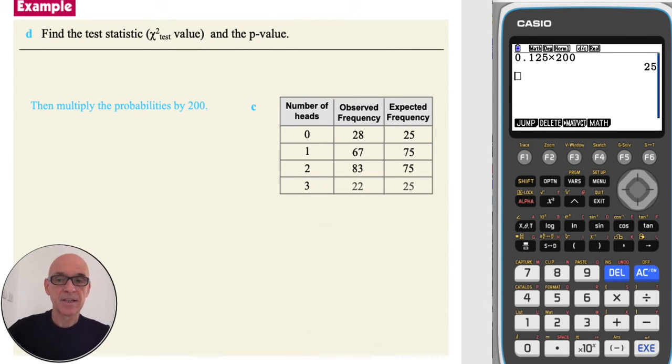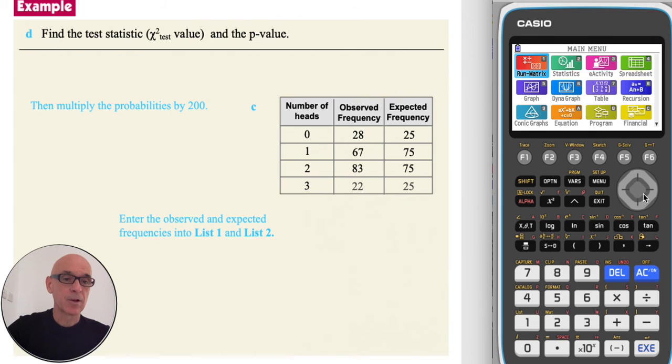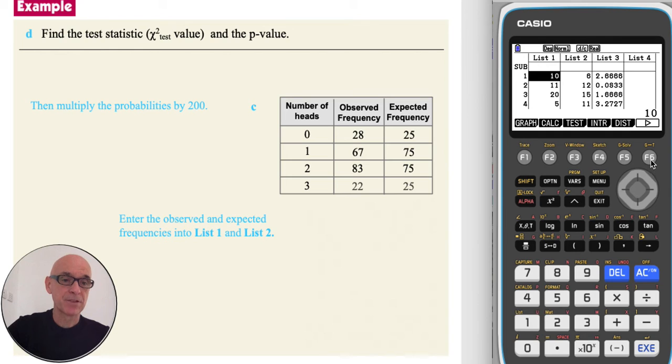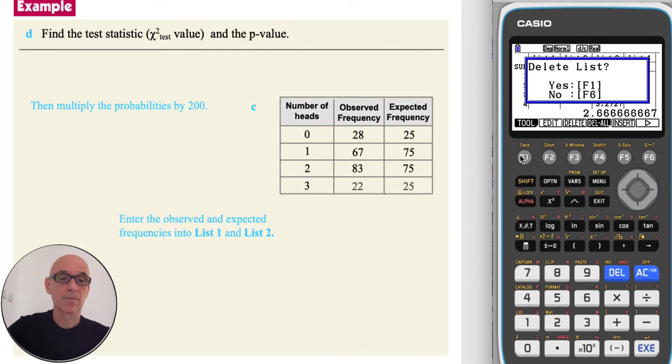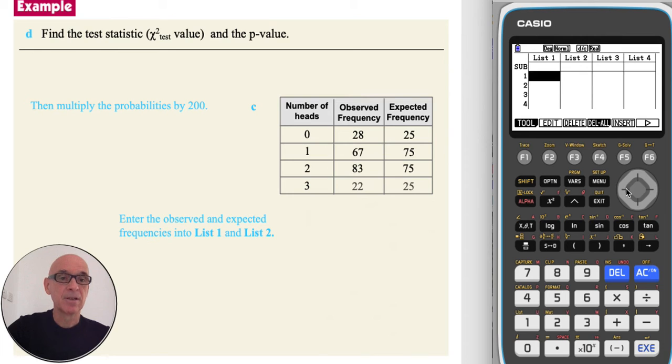In part D to find the test statistic and the p-value, we need to enter the observed and expected frequencies into list 1 and list 2 on the calculator. So from the main menu, if I go back to the statistics option, and press F6, and then F4 to delete all the contents of the list, confirming with F1, and scrolling across and repeating that process for the other lists.